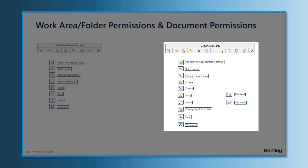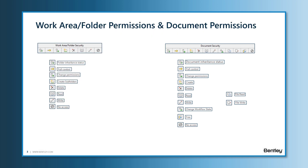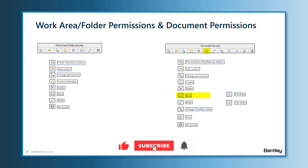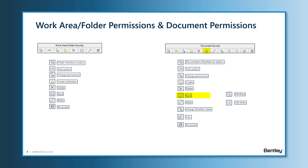On the right are the document permissions. Even though some icons look exactly the same as the folder permissions, they really apply to documents instead of folders. For example, Create and Delete would allow designated users to create and delete documents once enabled. View Document will allow users to see the document displayed in the selected folder — this does not mean users can view the content of the document. In order for that, File Read is required.